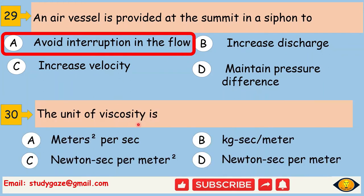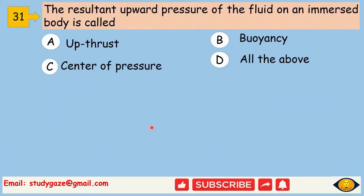The unit of viscosity is kilogram second per meter. The resultant upward pressure of the fluid on an immersed body is called buoyancy.